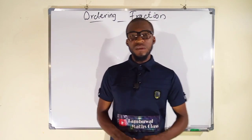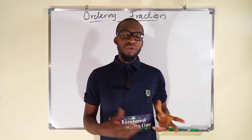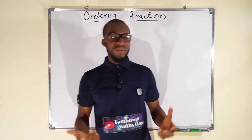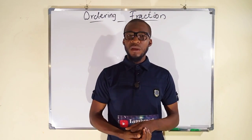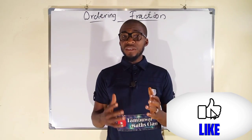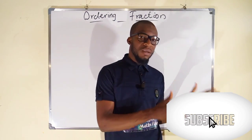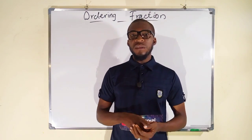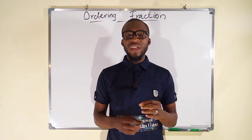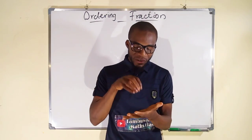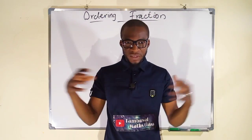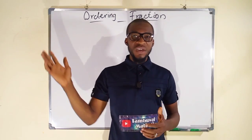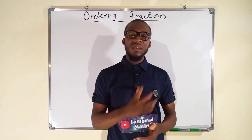Hello, good morning viewers. In this tutorial we are going to talk about ordering fractions. Ordering fractions is the idea of arranging fractions in either ascending order or descending order. The main objective of the lesson is for students to be able to identify the smallest fraction and the biggest fraction in a set of fractions, because that is the only way you can arrange them in ascending or descending order.